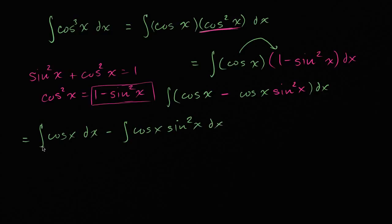Now, this is where it gets interesting. This part right over here is pretty straightforward. The antiderivative of cosine of x is just sine of x. So this right over here is going to be sine of x. And I'll worry about the plus c at the end, because both of these are going to have a plus c, so might as well just put one big plus c at the end.